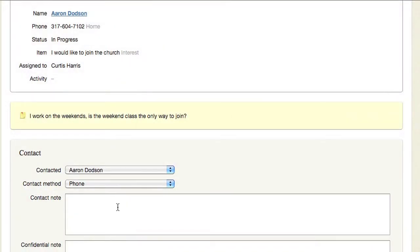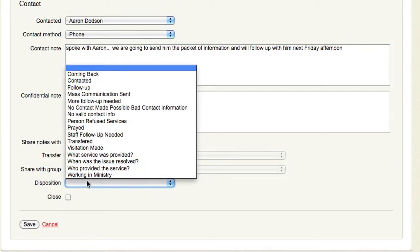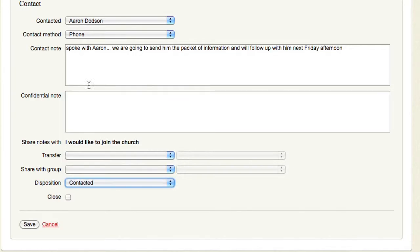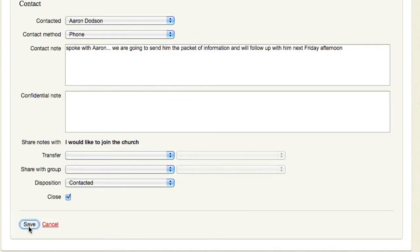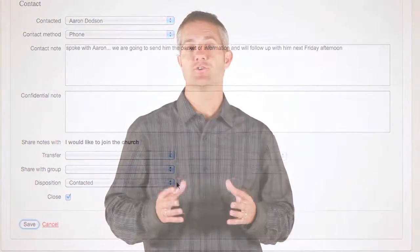When following up, you can document the results of your connection with the individual and record both public and confidential notes. Regularly connecting with your members in a meaningful way helps to foster a sense of community within the church. As your church grows larger, it becomes increasingly difficult to stay in touch with your church family. Fellowship One can help maintain those personal connections in several ways.